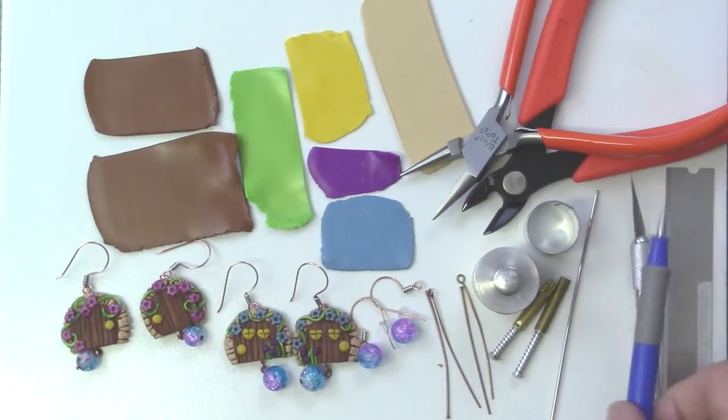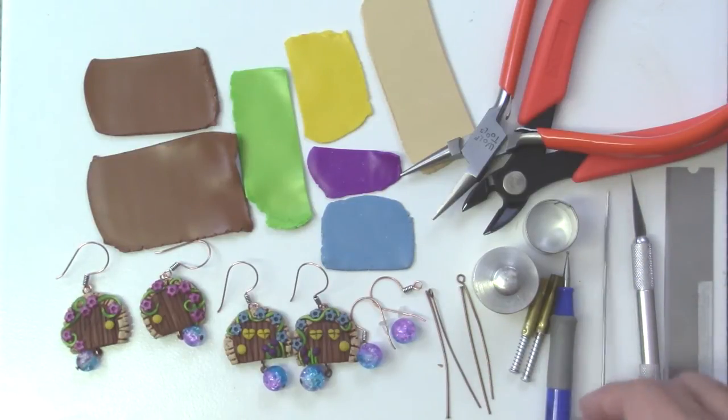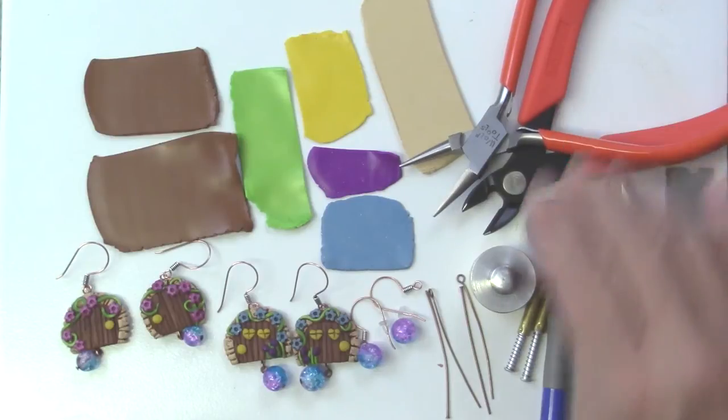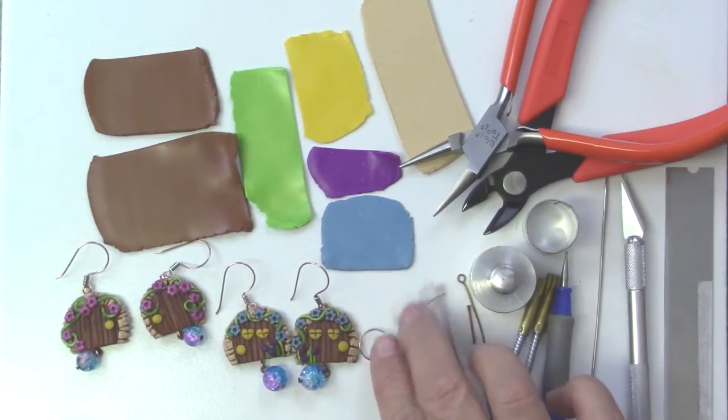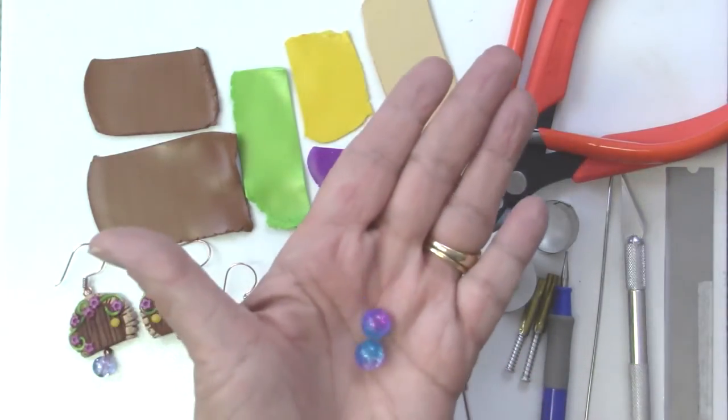And then tools, a blade, craft knife, a little embossing tool, some jewelry pliers and jewelry findings. And then I've got these little beads that are kind of sparkly and sort of a cracked marble type bead.